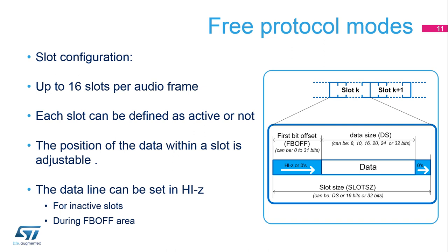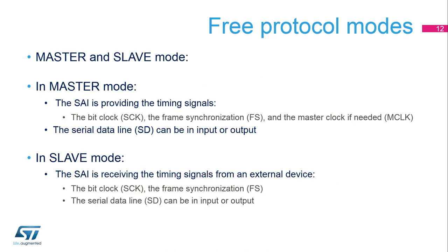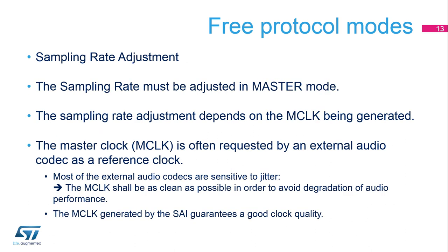This function can be useful when the data line is shared between several devices. In master mode, the SAI can generate the master clock, MCLK, or use an external master clock via SAI-EXTCLK-PADS. The master clock can be used to provide a reference clock to the external audio codec. In slave mode, the MCLK signal is not used. In master mode, it is up to the SAI to generate the timing in order to provide the correct sampling rate. In slave mode, the sampling rate is provided by the external audio device.